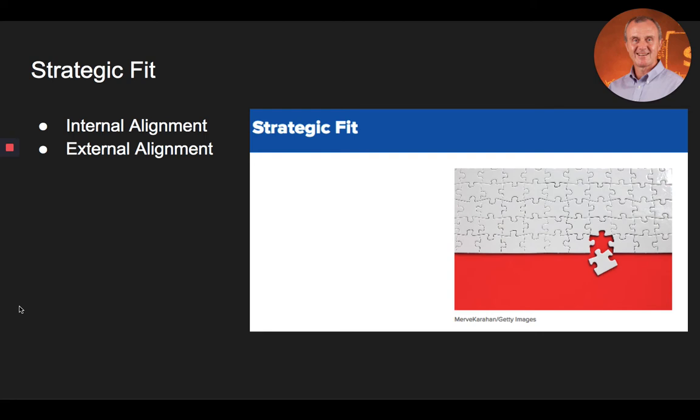The second dimension of fit, external alignment, considers the environment in which the firm competes. A firm's environment might represent new opportunities for growth, and the firm's strategic decisions must fit with these opportunities. External alignment is achieved when a strategic decision capitalizes on external opportunities and minimizes external threats. Strategic decisions that exploit the strengths of a company and the opportunities that it has, while minimizing the impact of its weaknesses or threats, are likely to be more profitable than others.